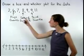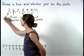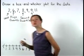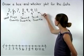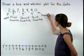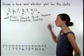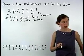Now, notice that the least number in the data set is two, and the greatest number in the data set is eleven. Now, we're ready to make our box and whisker plot.